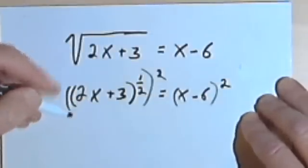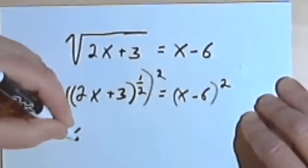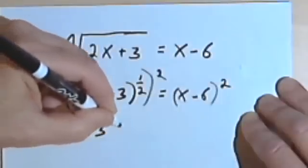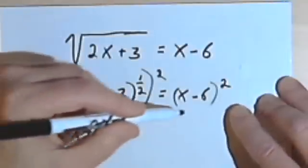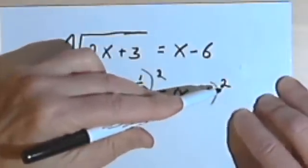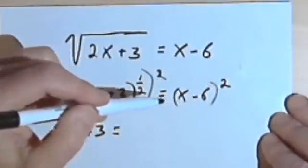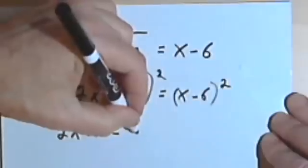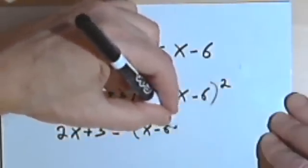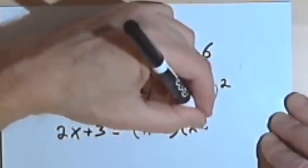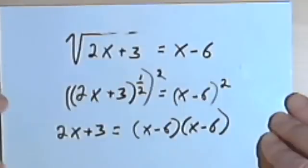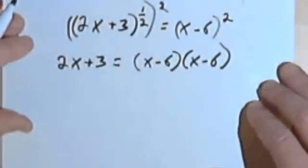So the left side is going to become just 2x plus 3. Now be careful here, x minus 6 squared is like saying x minus 6 times x minus 6. In other words, I'm going to end up with x minus 6 times x minus 6, and then I'll have to figure out what that is.